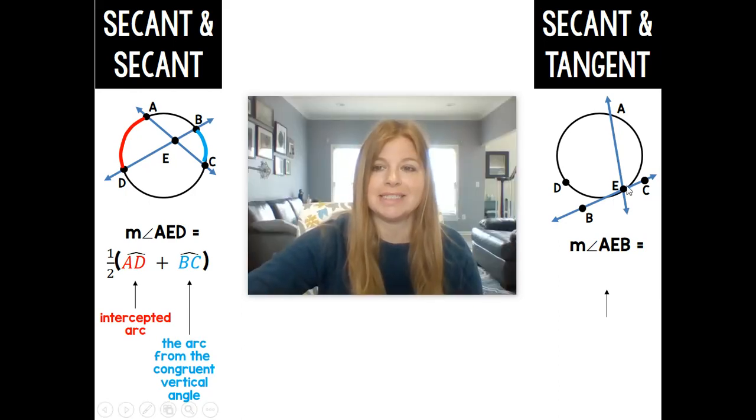Next one, a secant and a tangent. Now this one's actually a little easier. When you have a secant and a tangent, this angle AEB, this big angle here, is simply just one half of the arc.